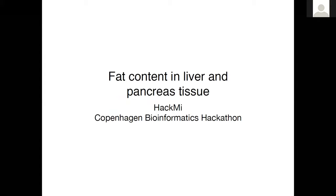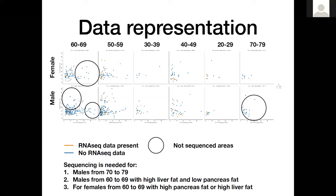So I will tell you about this project — fat content in liver and pancreas tissue. We had two different tasks. One was data representation. We had two datasets: one with sequencing and one without. Here we have nice box plots showing the division by female/male and age groups, with axes being fat levels in liver and pancreas. Orange dots are sequenced data.